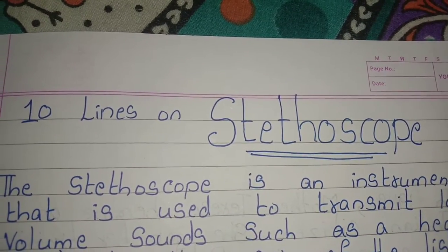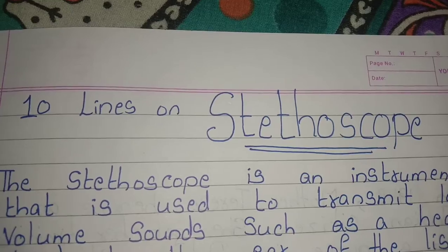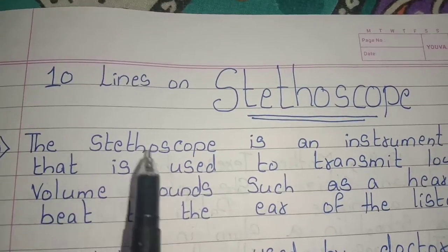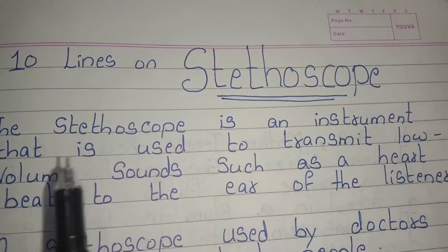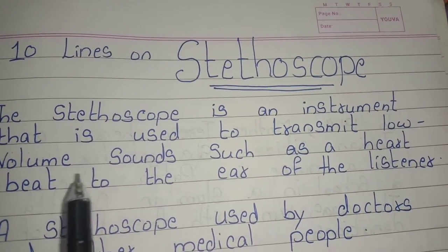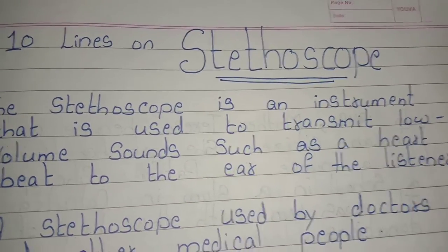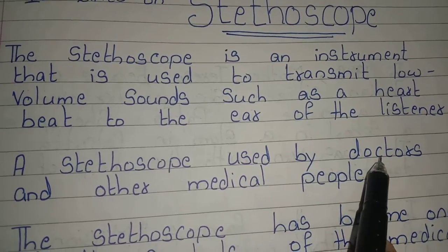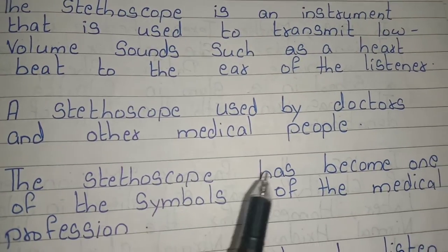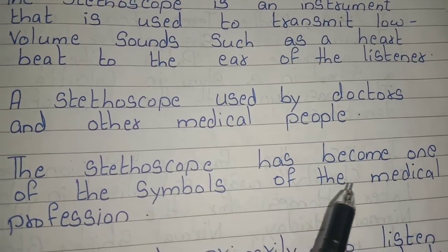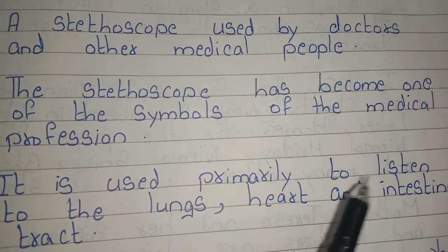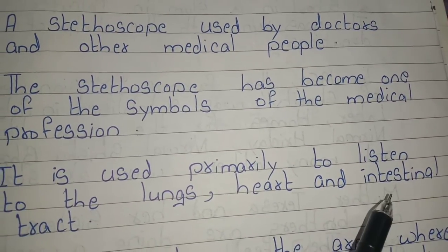Welcome back to Triyankush Learning Channel. In this video we are going to discuss 10 lines on stethoscope. The stethoscope is an instrument used to transmit low volume sounds such as a heartbeat to the ear of the listener. Used by doctors and other medical people, it has become one of the symbols of the medical profession, used primarily to listen to the lungs, heart, and intestinal tract.